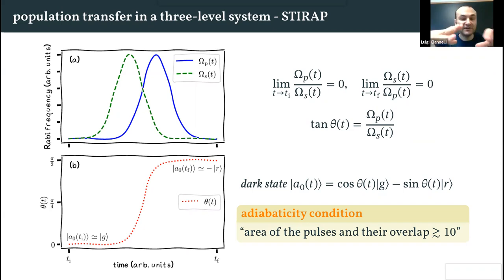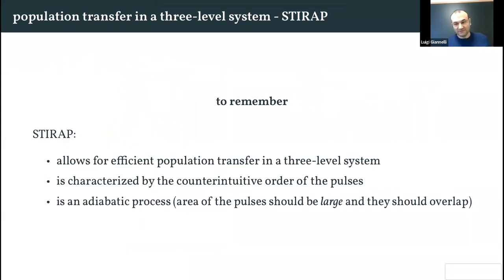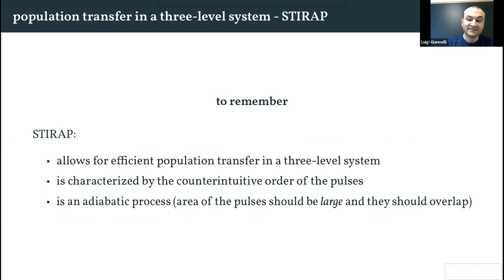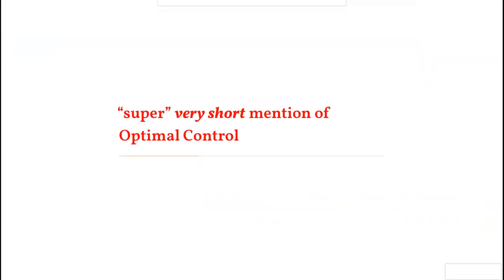To summarize STIRAP: it allows efficient population transfer in a three-level system, is characterized by counter-intuitive ordering of pulses, and is an adiabatic process, so the pulse areas must be large and the pulses should have sufficient overlap.